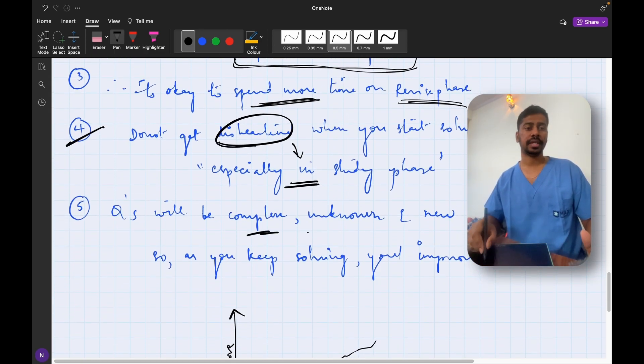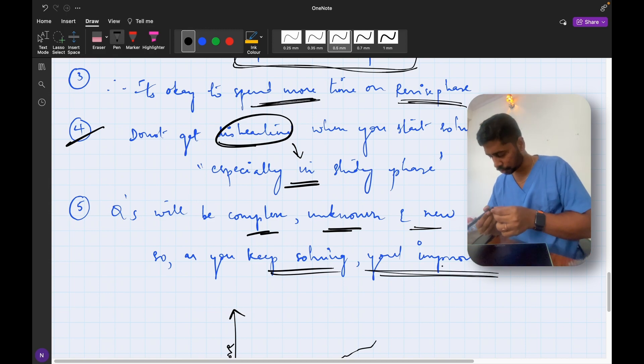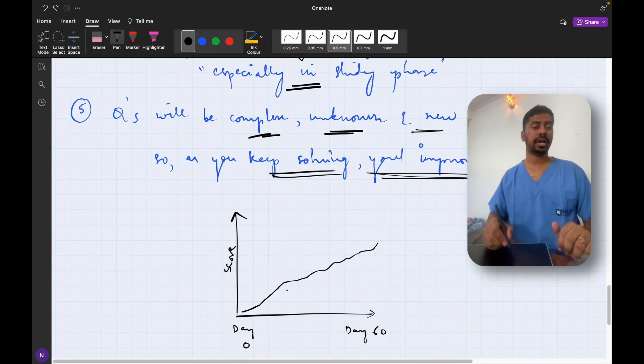As you keep practicing more and more eventually your score will improve and you will get much better scores. Questions will be complex, unknown and new even after you read the textbook. So as long as you keep solving you will improve your overall performance. So don't get disheartened and do not stop the preparation. This is how your ideal graph should look like: once you start solving you will get very low marks and as you keep practicing more and more your graph will improve like this and you will eventually pass the exam.